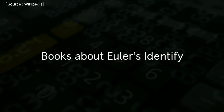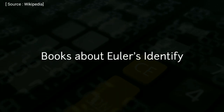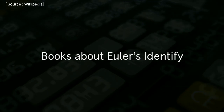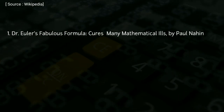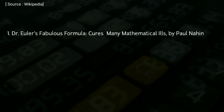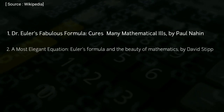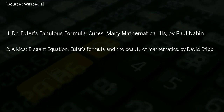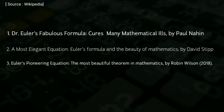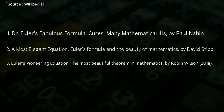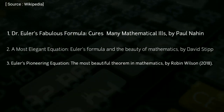At least three books in popular mathematics have been published about Euler's identity: Dr. Euler's Fabulous Formula: Cures Many Mathematical Ills by Paul Nahin; A Most Elegant Equation: Euler's Formula and the Beauty of Mathematics by David Stipp; and Euler's Pioneering Equation: The Most Beautiful Theorem in Mathematics by Robin Wilson.